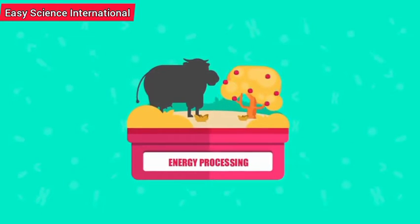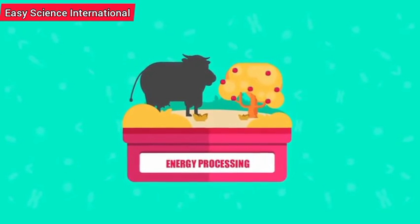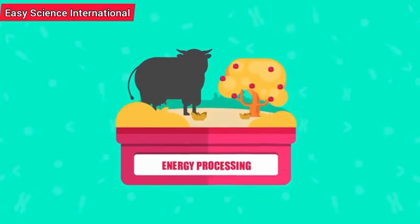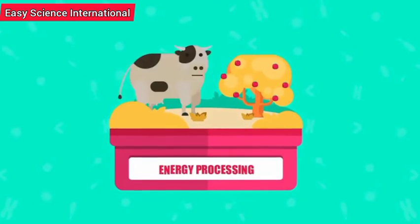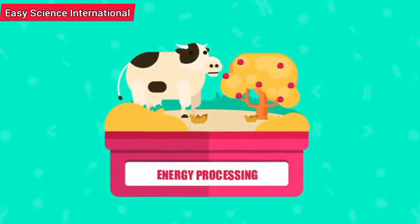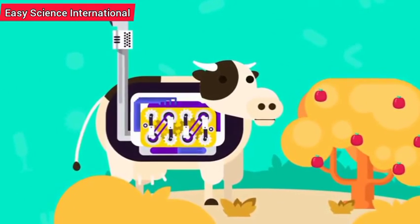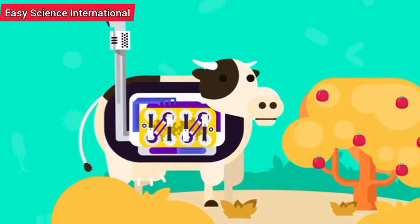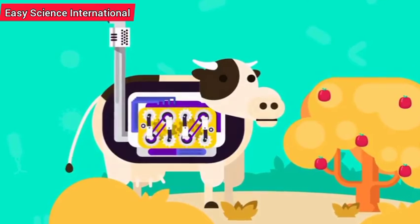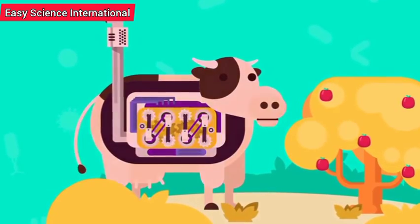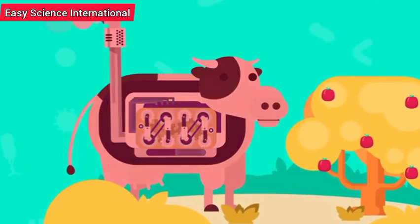The fourth characteristic is Energy Processing. We humans eat food in order to get energy. What we eat has also eaten some other food in order to utilize the chemical energy stored, in order to power its chemical activities and reactions.